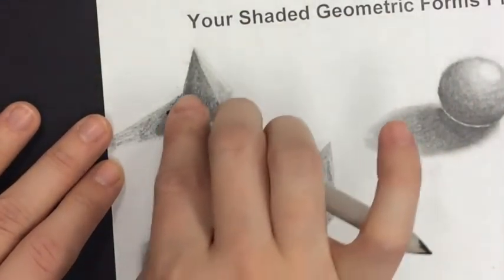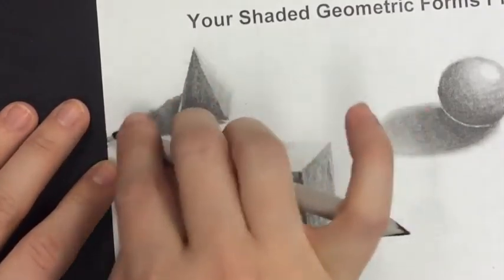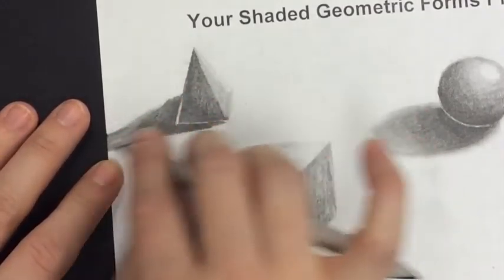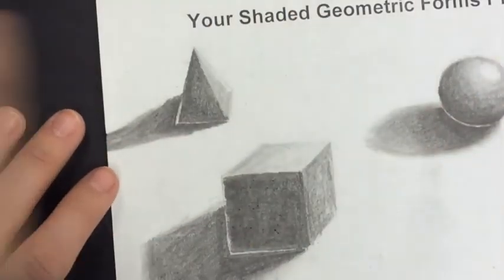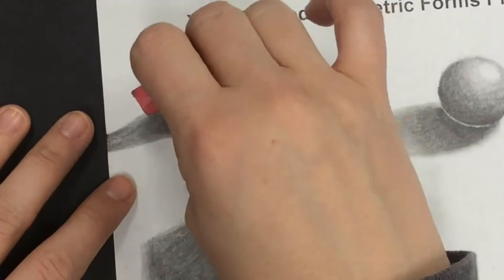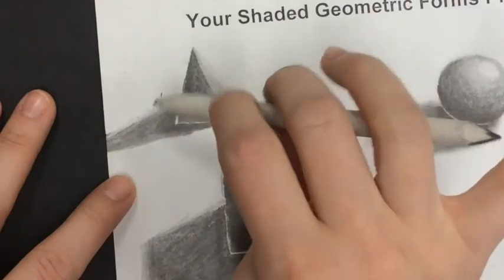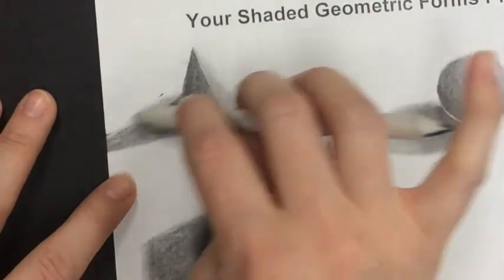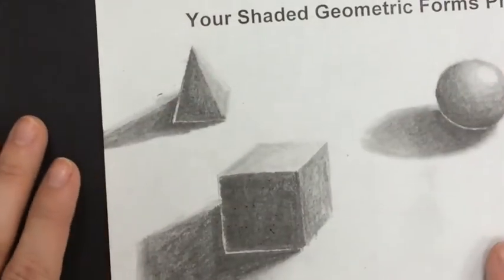Then blending my cast shadow. Whoops. You can go outside the edge a little bit and make it nice and soft. If you lose your shape, you can always touch it up, come back in with your blender. And there's my pyramid.